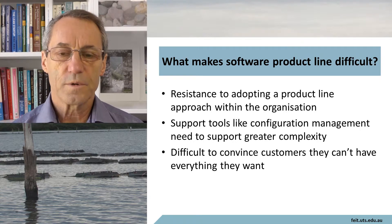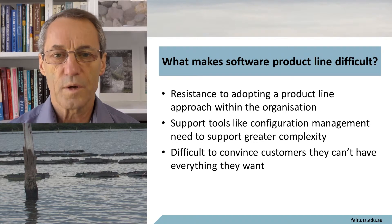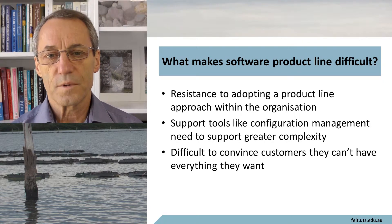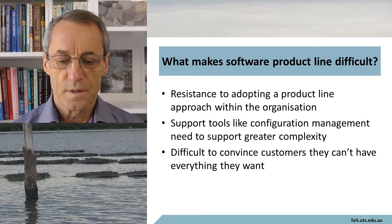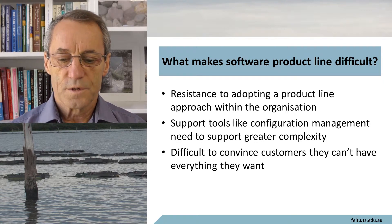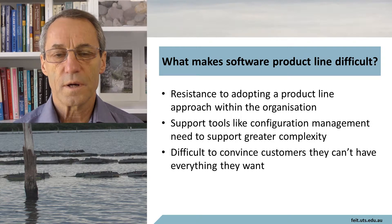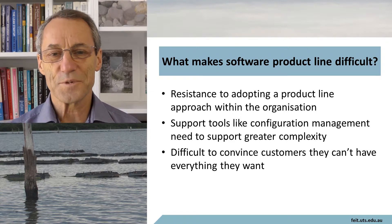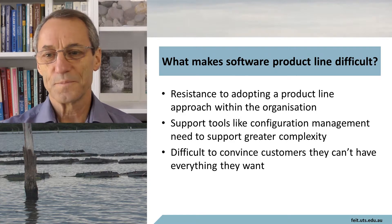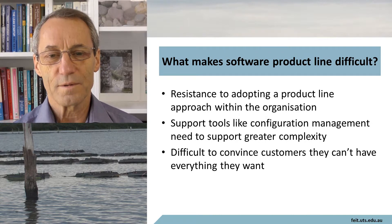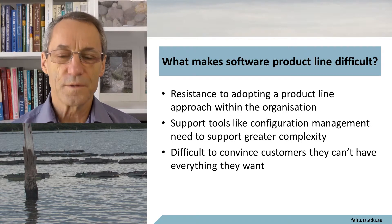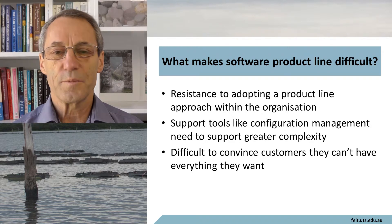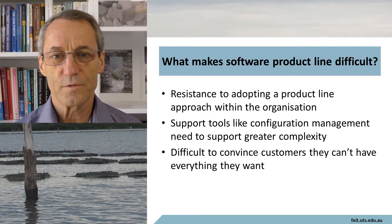What makes software product lines difficult? If you're setting out to develop a product line and haven't done it before, there's a certain amount of organizational resistance to adopting a product line approach. Support tools like configuration management systems need to handle increased complexity. It's also difficult to convince customers they can't have everything they want — customers accustomed to a sole supplier expect you can do everything they want. With a product line, you can only implement things that pretty much every customer needs, or things that are part of the individualization of the product for different customers.